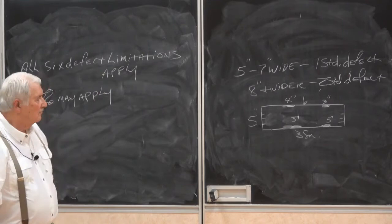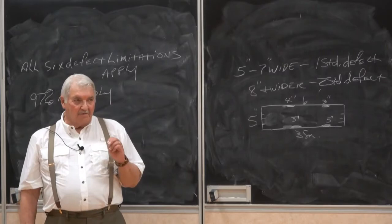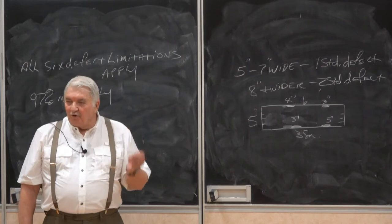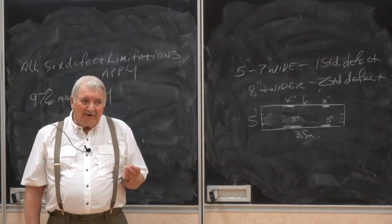I strongly recommend that when you're grading 6 and 7 foot defect grading FAS walnut, use up all the free. Once you use up all the free, anything you've got left over is defect.